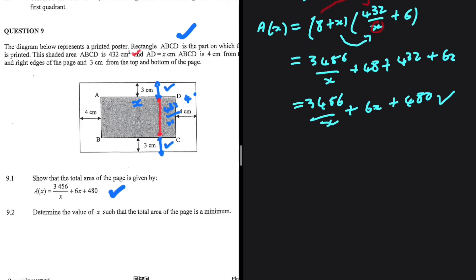Let's move to 9.2. We're supposed to determine the value of x for which the total area will be a minimum. We're going to differentiate the equation in 9.1 and equate it to 0.